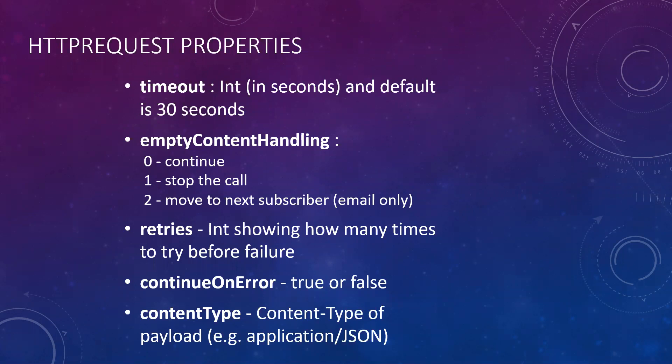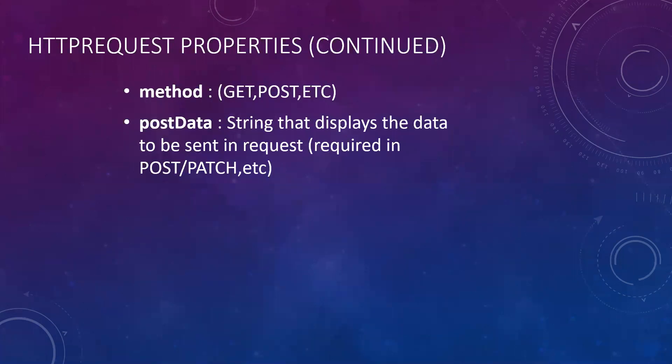This allows you to control and better handle those contexts. Then we have continue on error, which is a true or false. Content type is the content of the payload you are pushing in if you are passing a payload. Then we have method, where we put which method we want — get, post, put, patch, etc. And finally post data, which is a string — note any object, JSON object, array, or anything that is not a string must be stringified. Any actual object types passed there will cause an error. This is required in post, patch, put, etc.